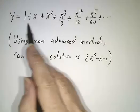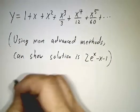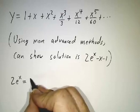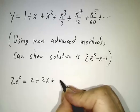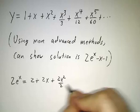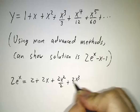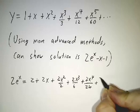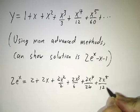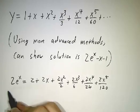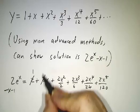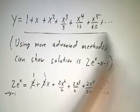And you'll notice that this really is the series for 2e to the x minus x minus 1 because 2e to the x is 2 plus 2x plus 2x squared over 2 plus 2x cubed over 6 plus 2x to the fourth over 24 plus 2x to the fifth over 120. You subtract off x and 1, this becomes a 1, this becomes a 1, and it's exactly what we have.